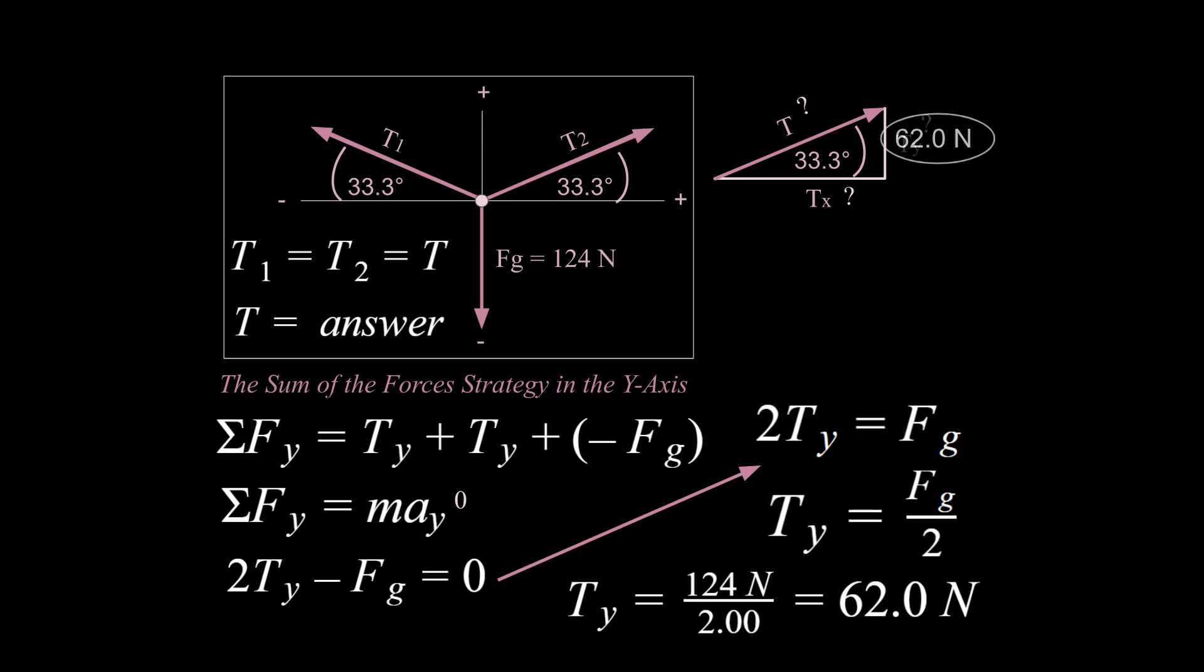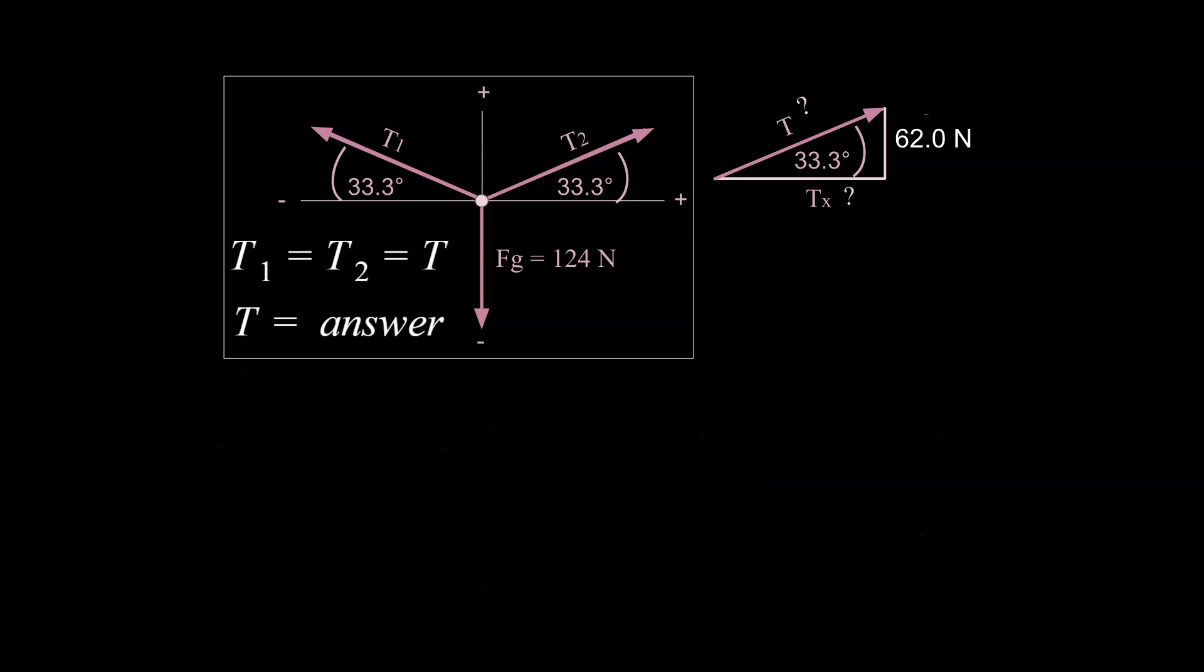Now what we can do is update our diagram over here. Now we've got two bits of information in the right triangle, which means we can solve for more of the right triangle. And what are we looking for? Well, we're looking for t.